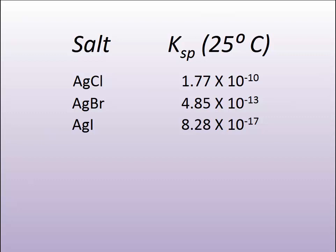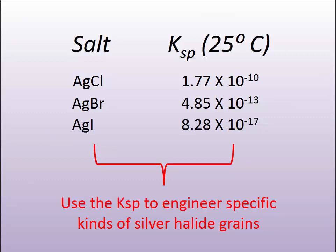This is a key point. These are the values we use to engineer and develop specific silver halide grains for specific applications. The composition of a grain is very much determined by these KSP values when we do an emulsification process.